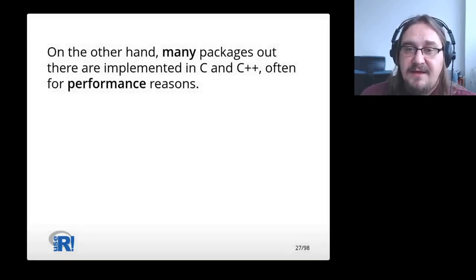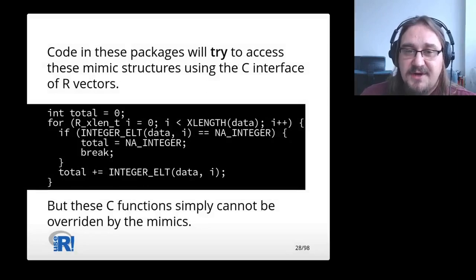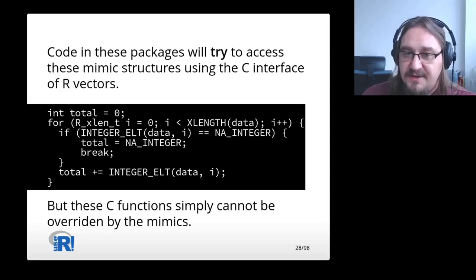On the other hand, many packages out there are implemented in C and C++, often for performance reasons. A couple of these packages will try to access these mimic structures using the C interface of R vectors. For instance, it will try to get the length of vectors by executing function xlength, and it will try to get individual elements of the vector by executing integer_elt. But these C functions simply cannot be overridden by the mimics, so they fail.